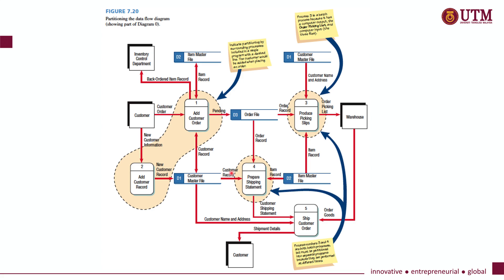Process 4 is another partition where it will produce a record in batch processes. Both Process 3 and Process 4 are partitioned because they will be performed at different times, and they will automatically create a report to be sent to another entity or another process.